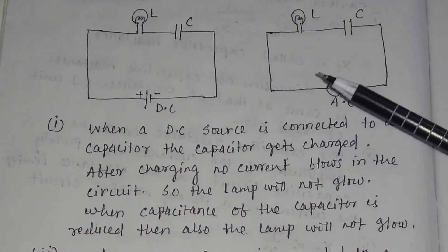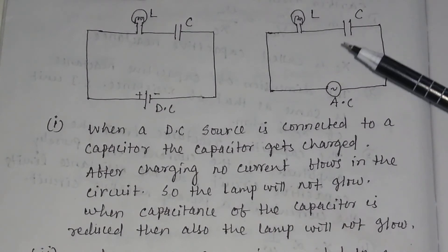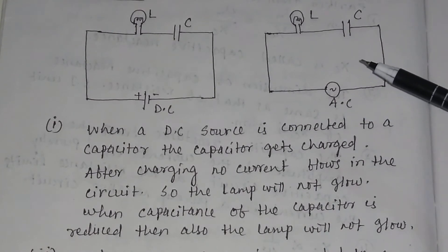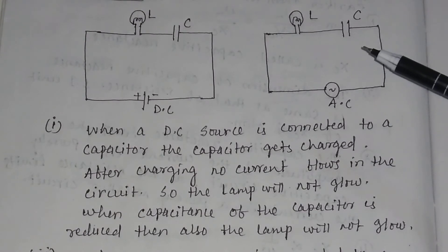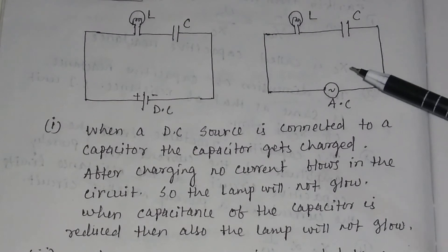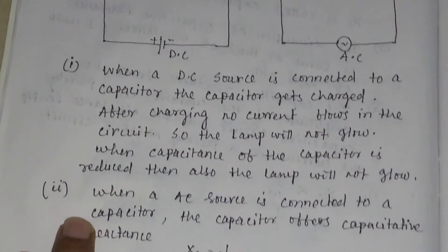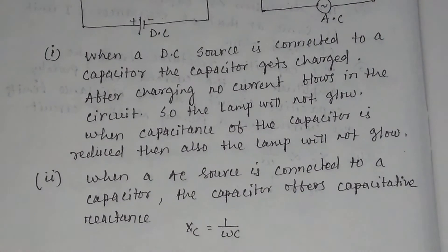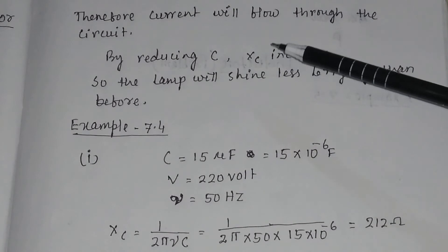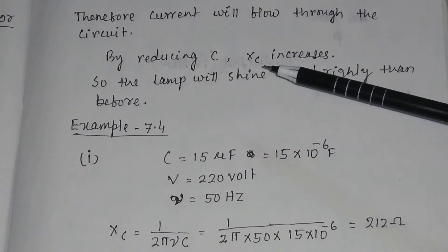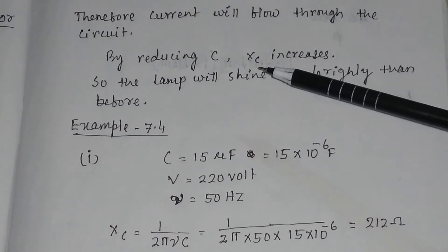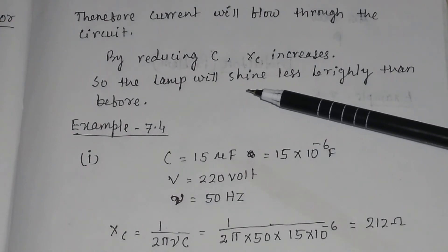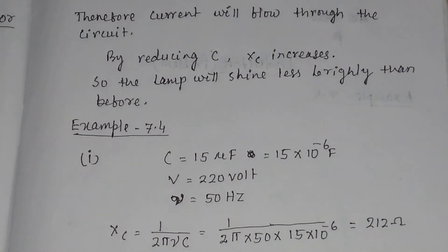Now let us discuss what happens to the bulb when the capacitor is connected to an AC source. When an AC source is connected to a capacitor, the capacitor offers capacitive reactance Xc = 1/(ωC). Since it offers resistance, current will flow through the circuit. By reducing the capacitance C, Xc will increase because Xc is proportional to 1/C. So the lamp will shine less brightly than before.